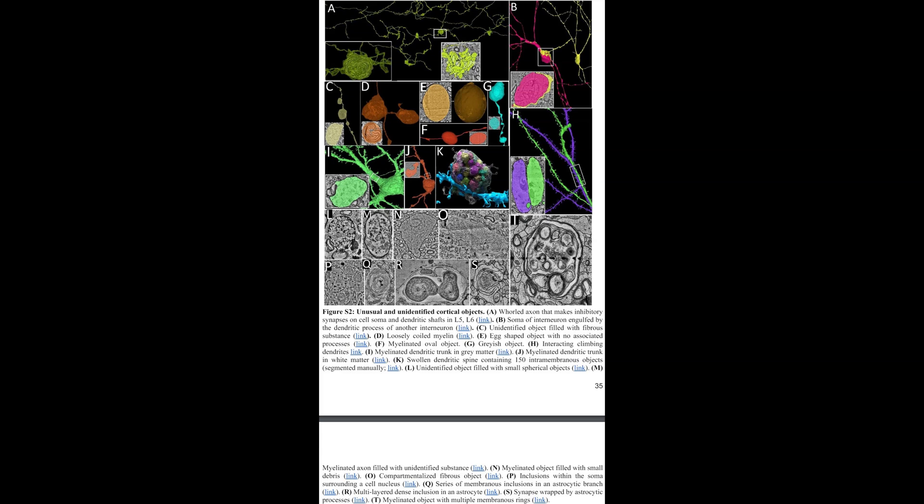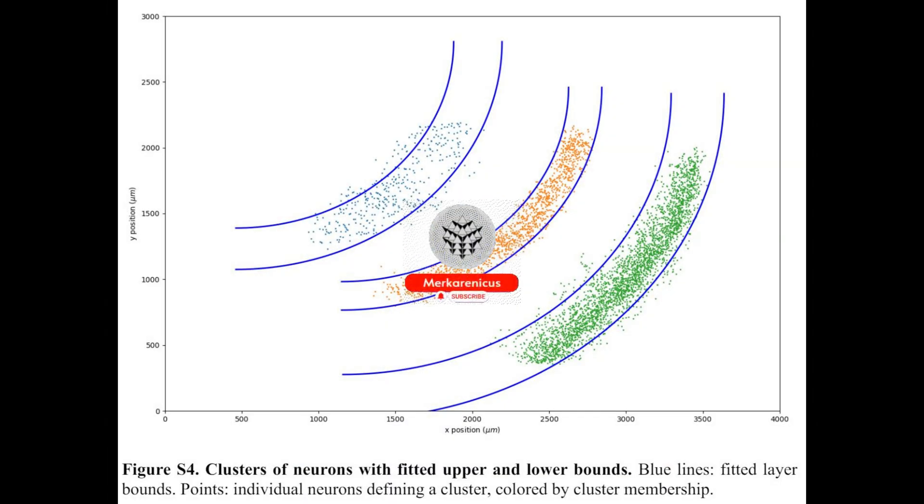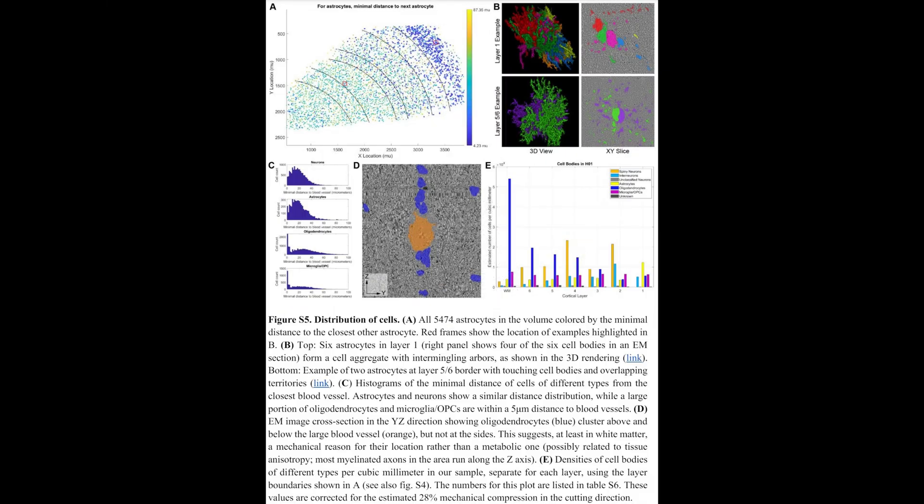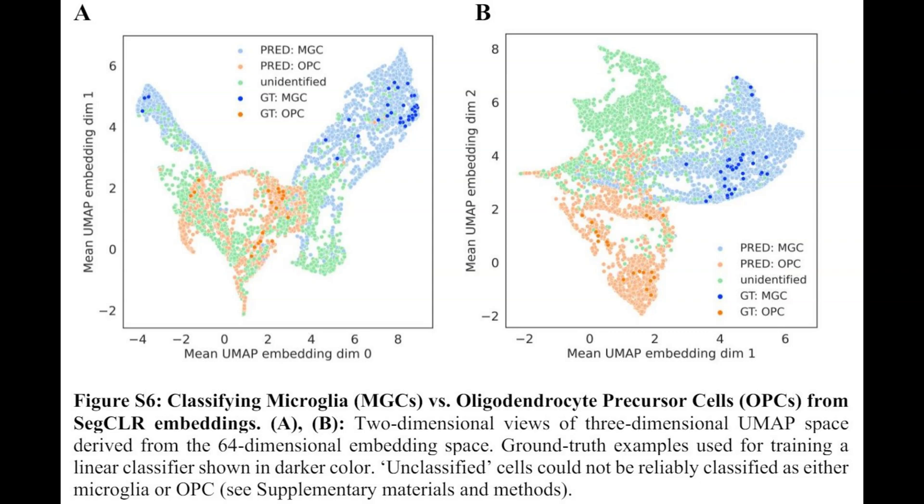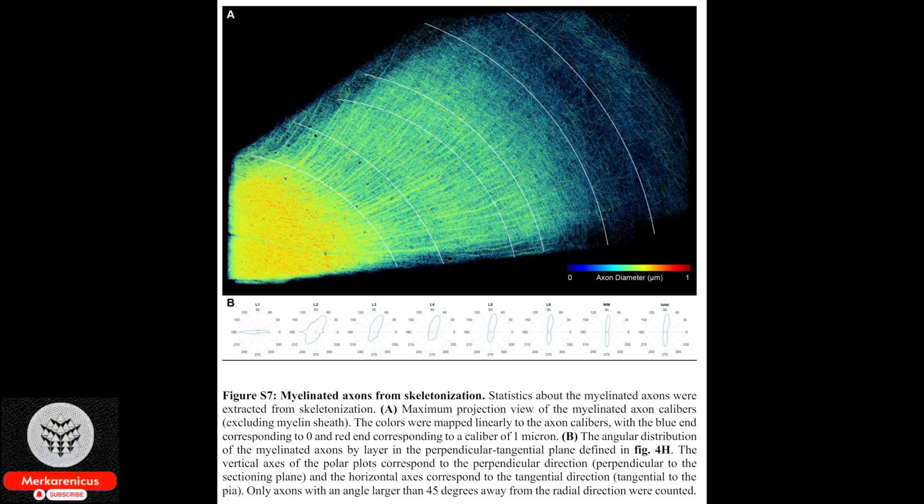In a groundbreaking collaboration between Harvard and Google researchers, they have achieved the monumental task of creating a three-dimensional reconstruction of human brain tissue at the synaptic level. This remarkable feat, documented in the prestigious journal Science, offers unprecedented insights into the intricate neural connections within our brains.